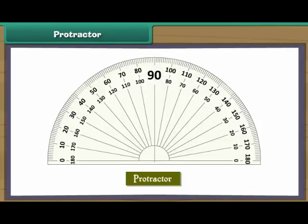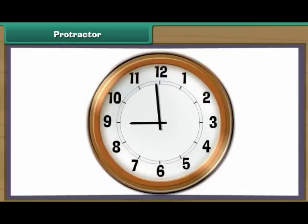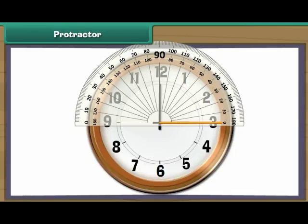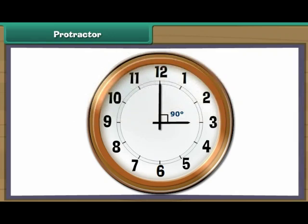A protractor is a semi-circular geometric instrument with degrees marked on it from 0 to 180. Let us measure the angles made by the hands of a clock with the help of a protractor. This clock shows the time as 3 — the long hand is on 12 and the short hand is on 3. Place the protractor on the short hand; the horizontal baseline must coincide with it and the midpoint must rest on the common point where the two hands meet. Read the inner marking — it is 90 degrees. Therefore, 3 o'clock makes a right angle.